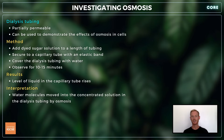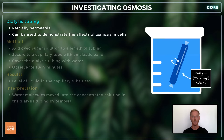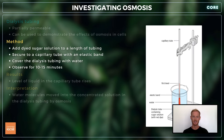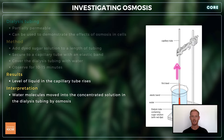Next you need to know how to conduct two types of experiments on osmosis, the first of which involves something called visking or dialysis tubing. Dialysis tubing is partially permeable and can therefore be used to mimic the effects of osmosis in cells. Start by adding a strong sugar solution to a length of tubing, tie at one end and secure to a capillary tube with an elastic band. Making sure that the solution has entered the capillary tube, cover the dialysis tubing with water and observe for 10 to 15 minutes. Over time we would expect to see the level of liquid in the capillary tube rise as water molecules from the beaker move down a concentration gradient and into the concentrated solution within the tubing.